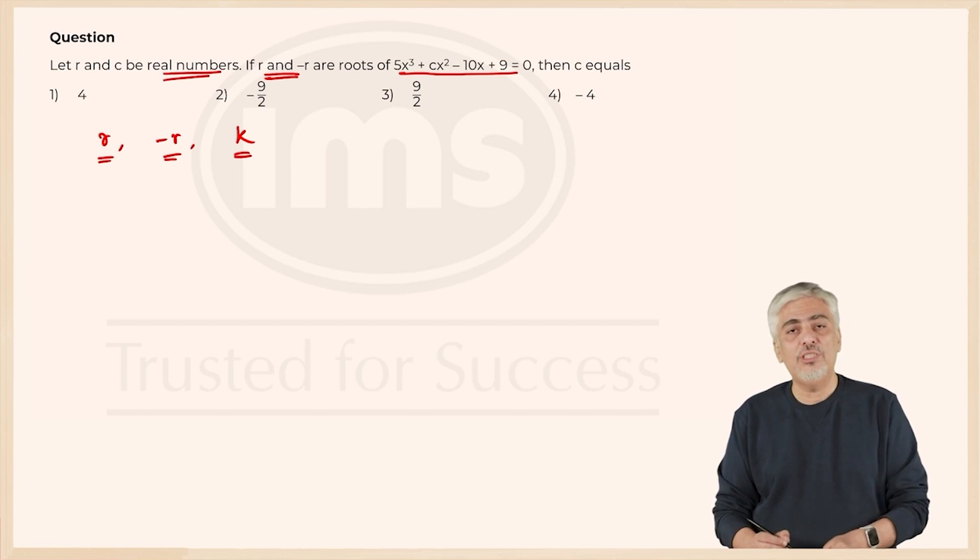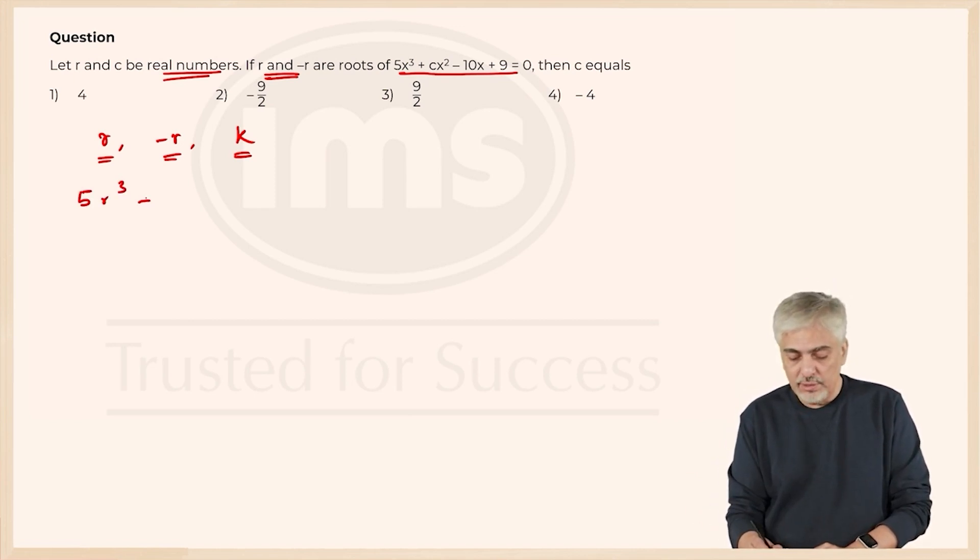I have a couple of approaches. I will talk about the approach which I used in the test. At that time I did not think of the best approach maybe and I used one of the approach. I first put x as r. When I say the root is r which means the value of one of the values possible for x as r. So, I got this equation: 5r³ + cr² - 10r + 9 = 0.